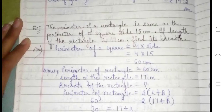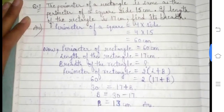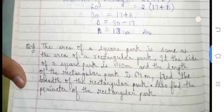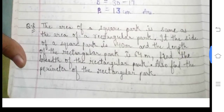Perimeter of square = 4 × 15 = 60 cm. Now the perimeter of rectangle is also 60 cm. Using the perimeter of rectangle formula, with length = 17 cm, we put up the values and find the breadth.